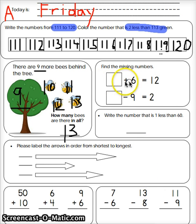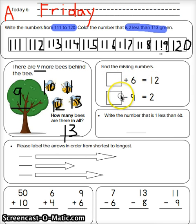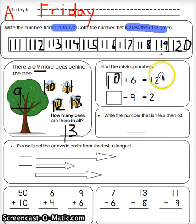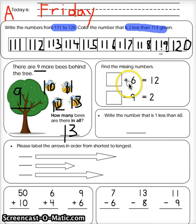We've done this one a lot of times. Find the missing number — what number plus six equals 12? Well, if I say one plus six that makes seven — nope, I don't want seven. I'm going to try a big number. How about ten? Ten plus six makes 16 — that's too big. It's got to be smaller than ten and bigger than one. Trying to guess takes a really long time. Your brain has a problem with this — switch it. If it's a plus, make it a minus. And if it's a minus, make it a plus.